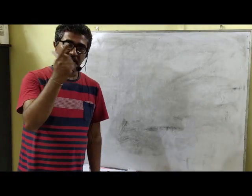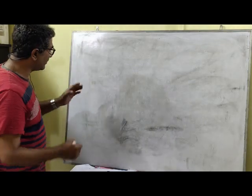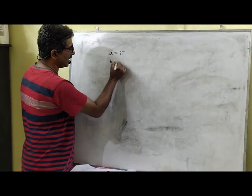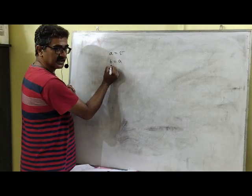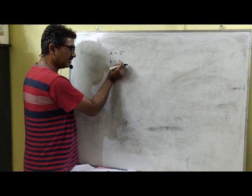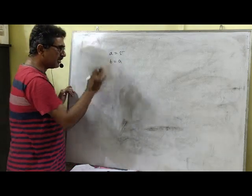Before starting with the input, let me tell you one more thing. We can assign the value of one variable into another variable. This is perfectly valid. See, A equal to 5. We can always write B equal to A. Now what it means is 5 is getting assigned to A, and then whatever is the value of A, I am again assigning it to B. This is perfectly valid.